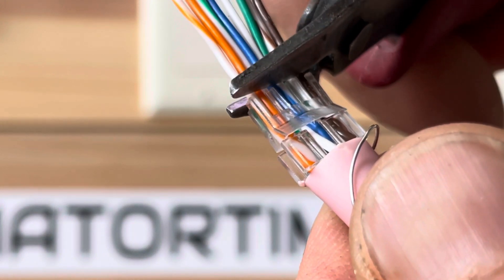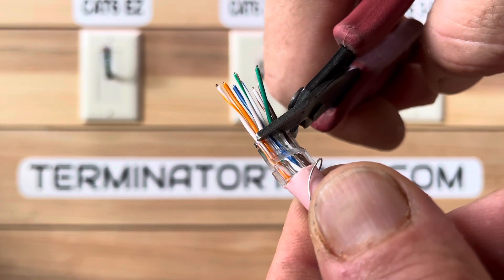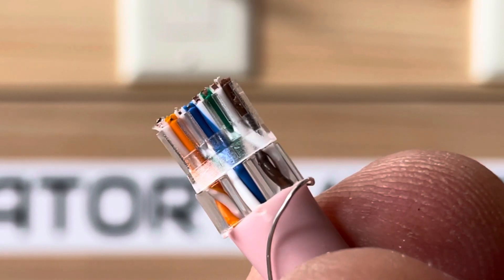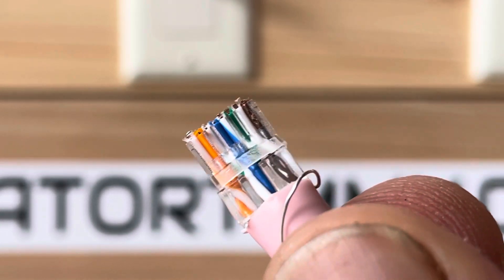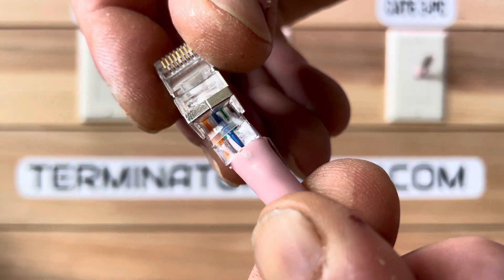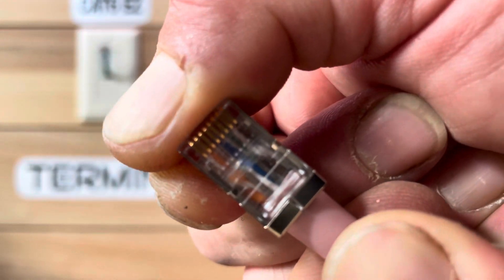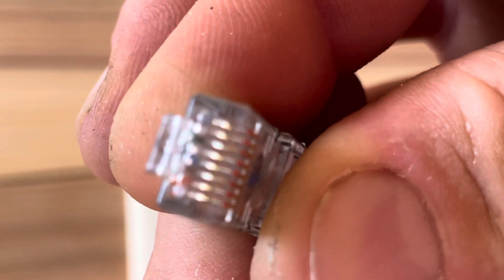Next, trim the excess. Grab that last piece, the RJ45 modular plug. With the ground near the brown, you will slide the plug on with the conductor pins facing you. Push until you feel a click. You should see the wire at the tip.